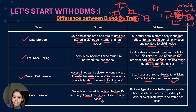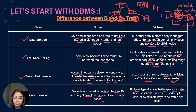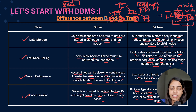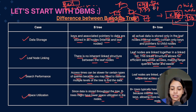The fourth difference is space utilization. In B-trees, since data is stored throughout the tree, there is lower space utilization per node because each node must reserve space for a key, a data pointer, and block pointers, leaving very little room for additional keys. In B+ trees, internal nodes only store keys and block pointers — no data pointers — so more keys can be stored per node, resulting in better space utilization overall.